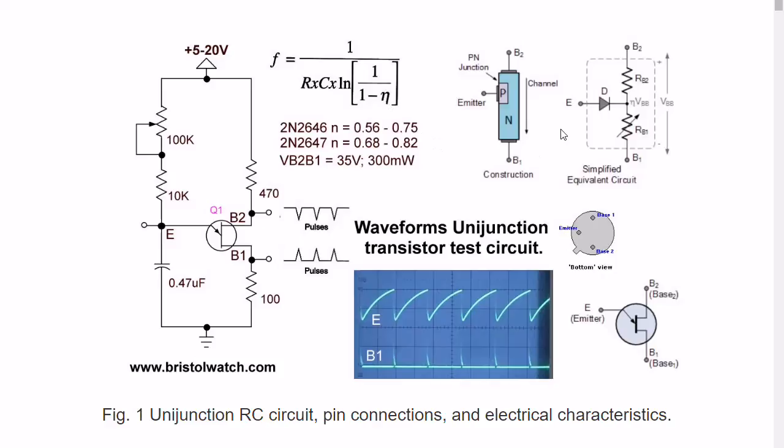In the upper right corner here is the basic construction of a unijunction transistor. It consists of an n-type bar silicon. I've heard that there's p-type bars of silicon but I have never seen one. It has a single uni or one p-type bar silicon. That is your emitter, and base 1 and base 2 are connected to VCC and ground. Notice of course that the p-type bar silicon is not dead center.